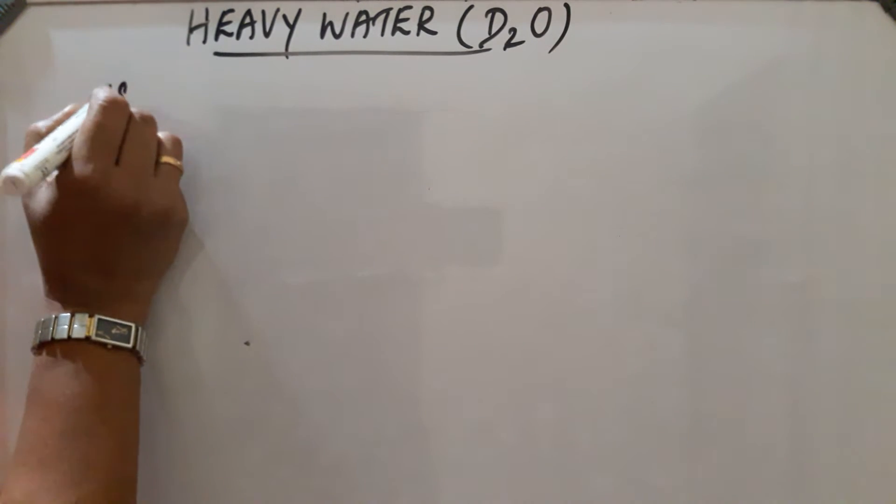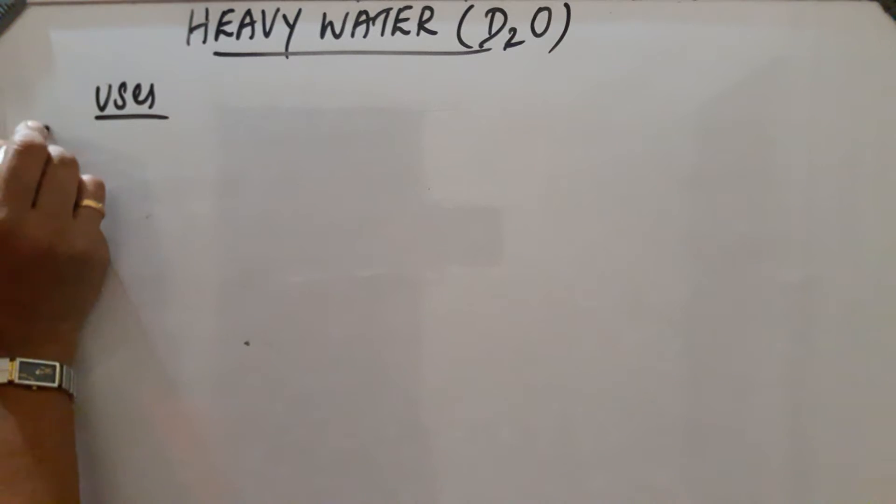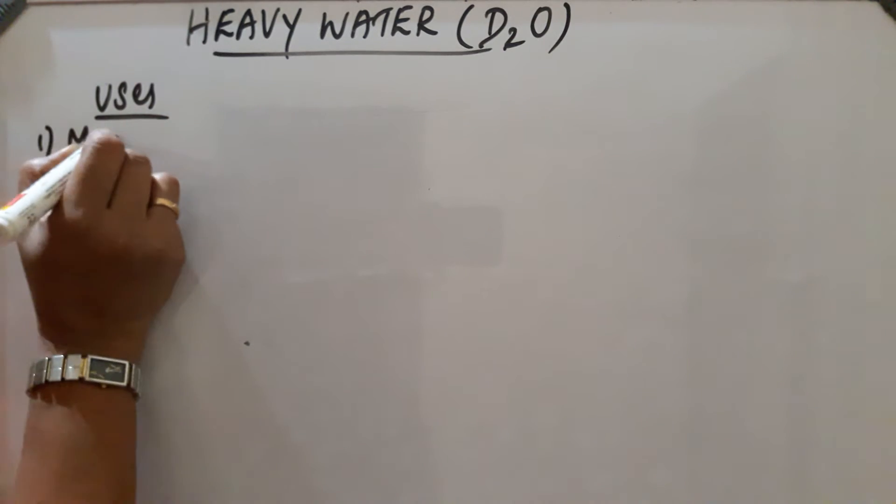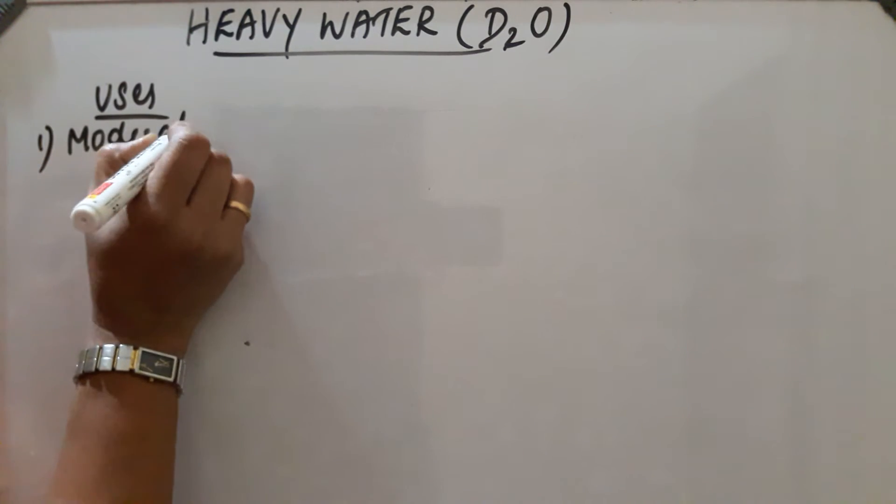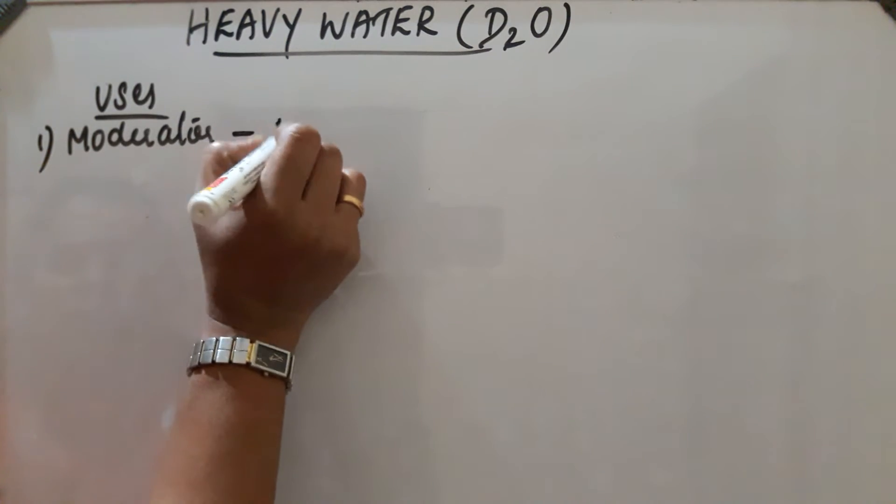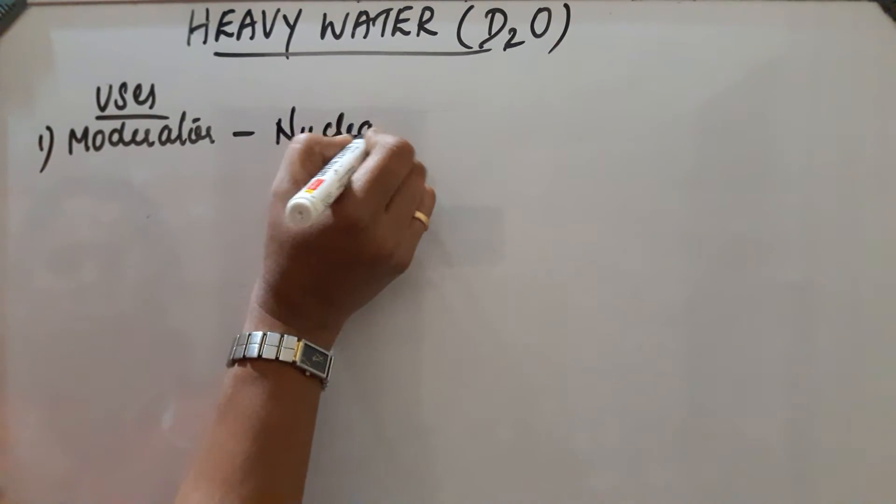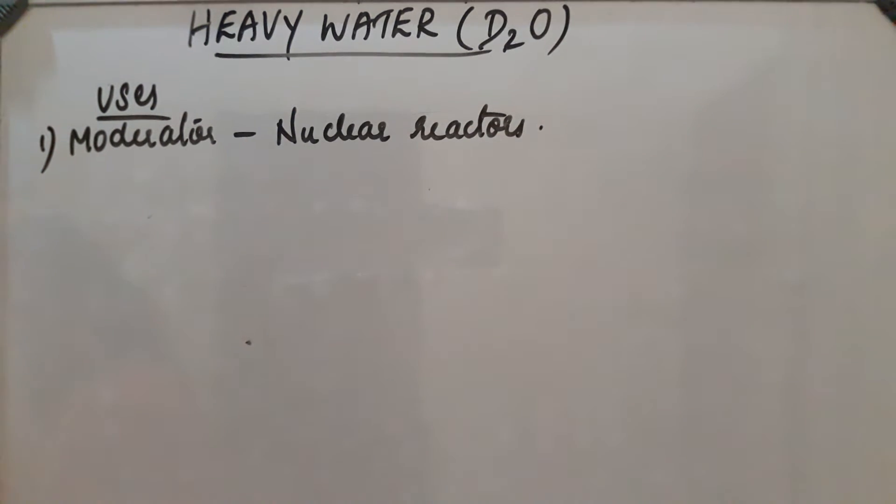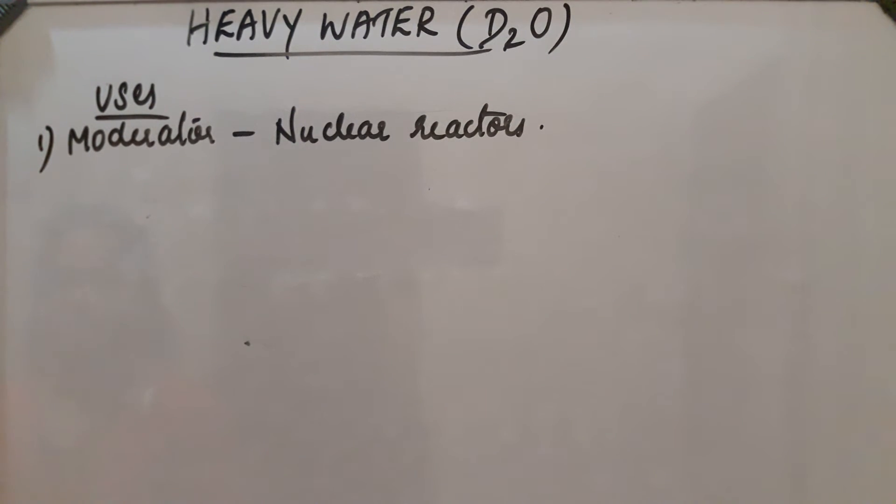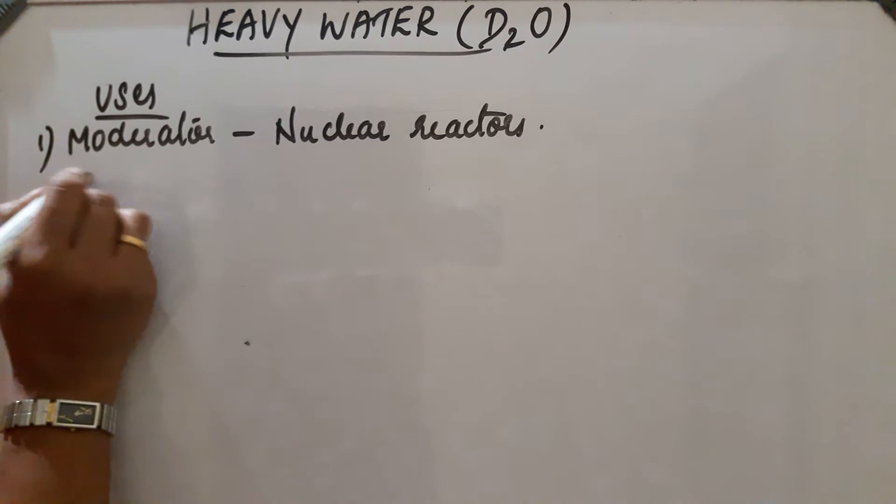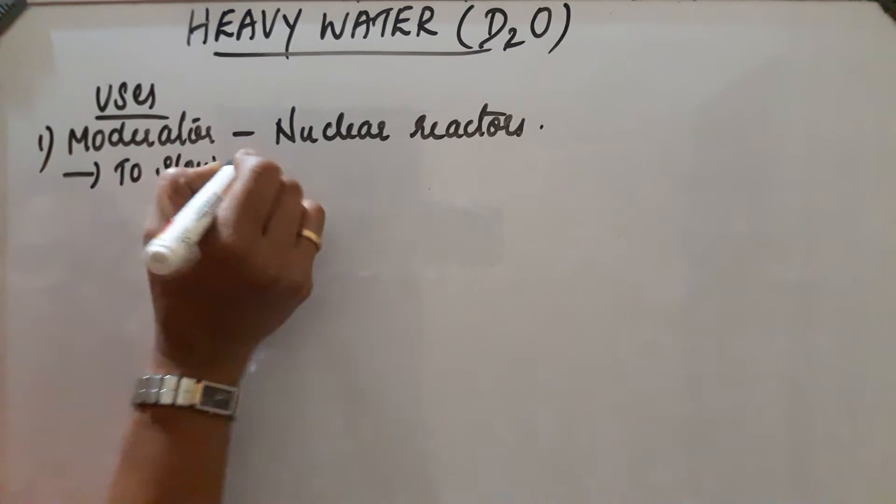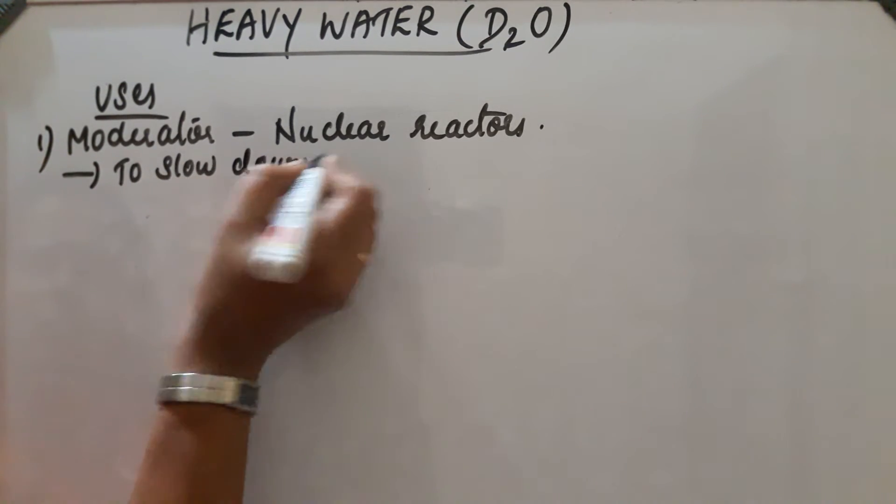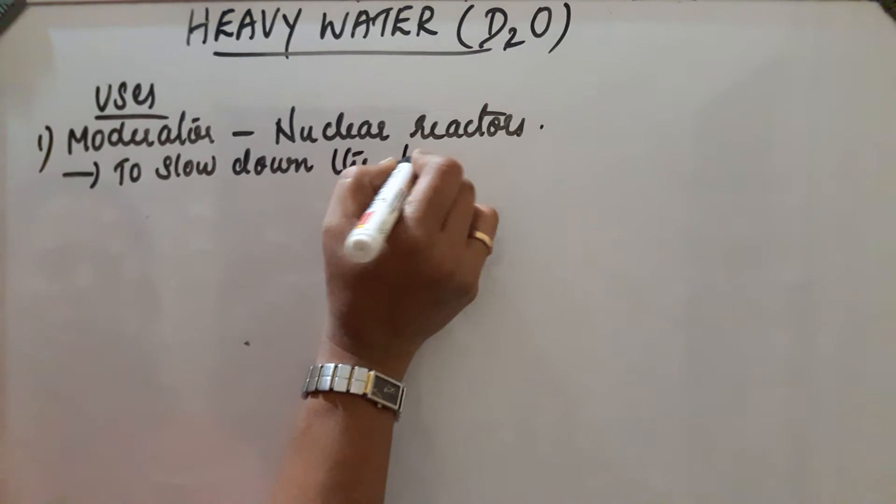Uses: First, it is used as a moderator in nuclear reactors to slow down the fast moving neutrons and controls the nuclear fission reaction.